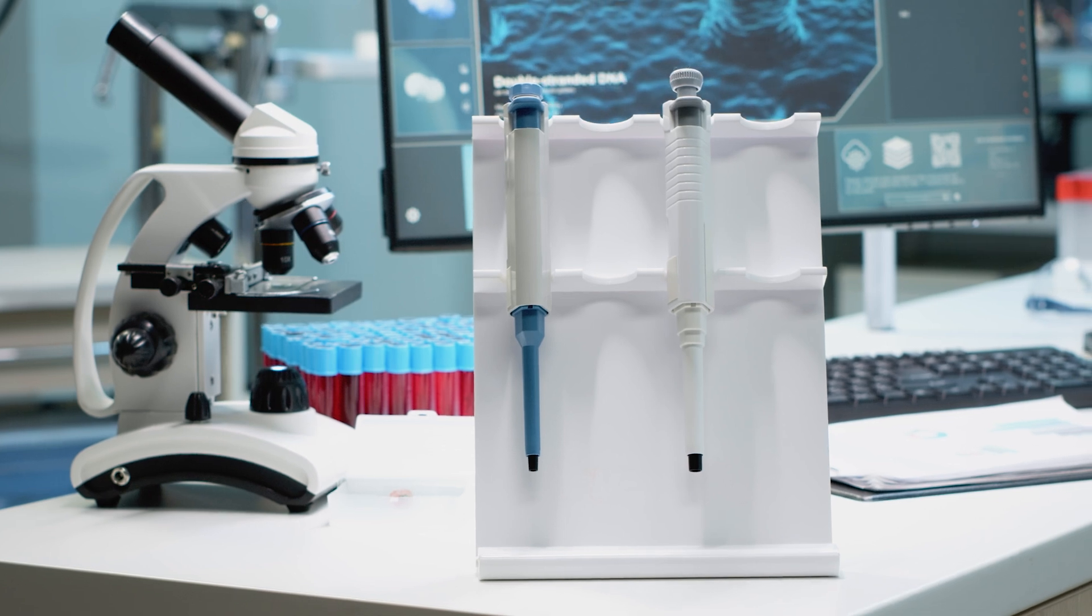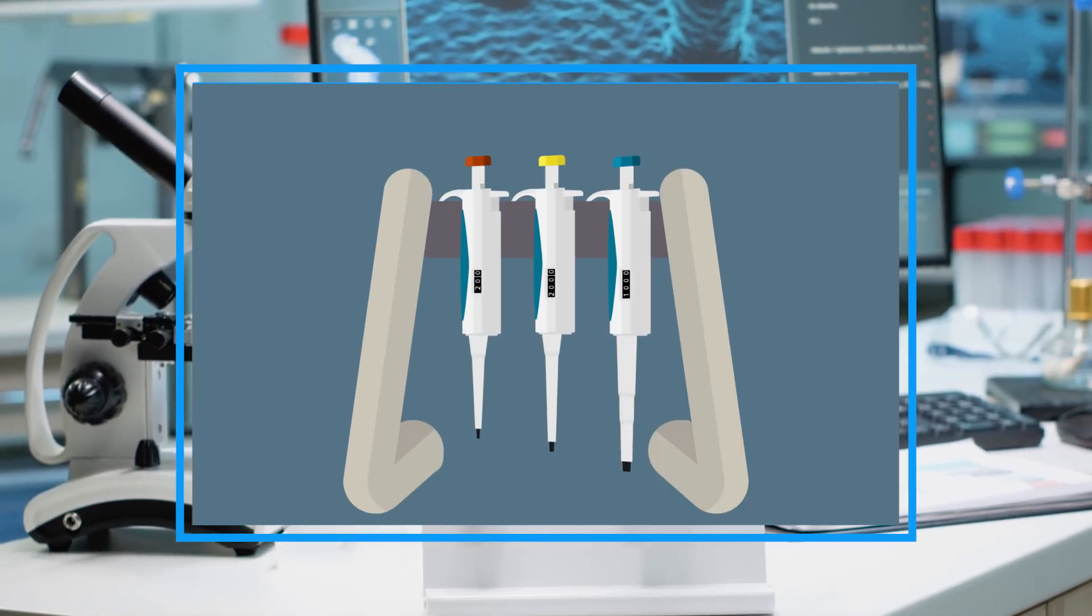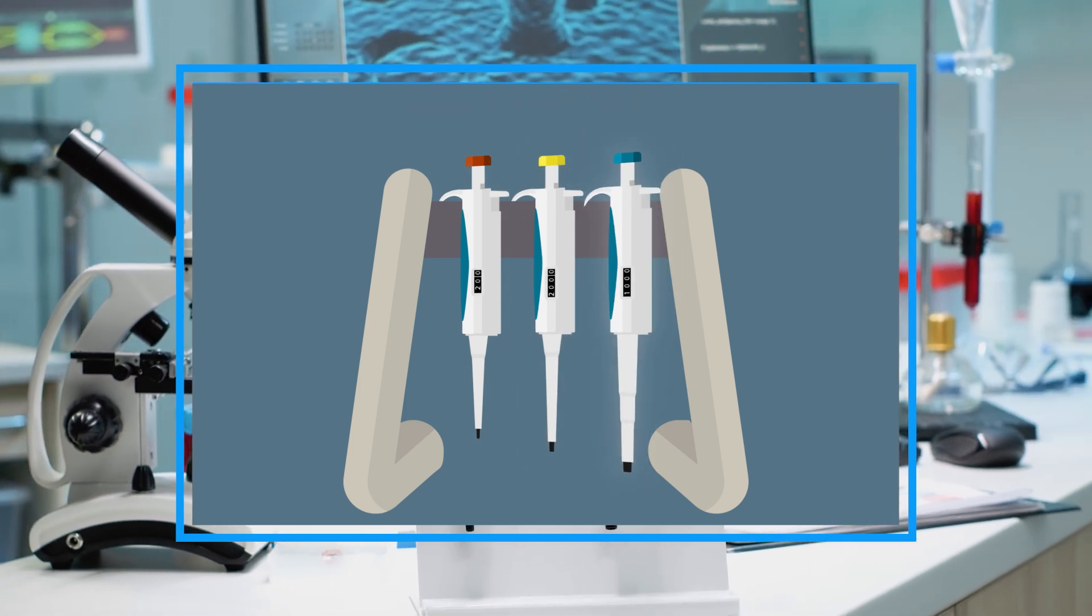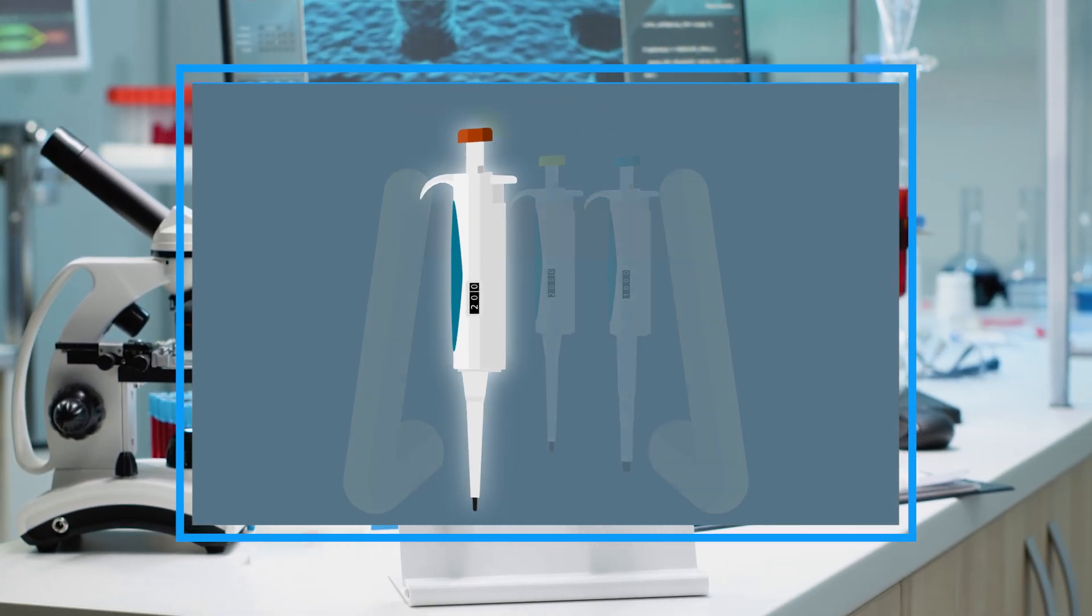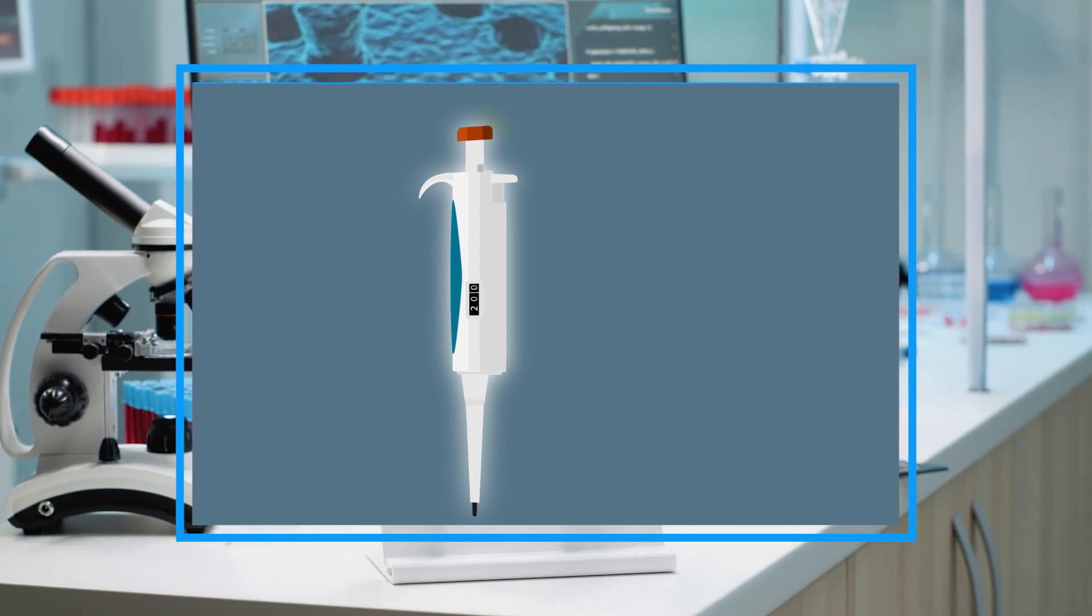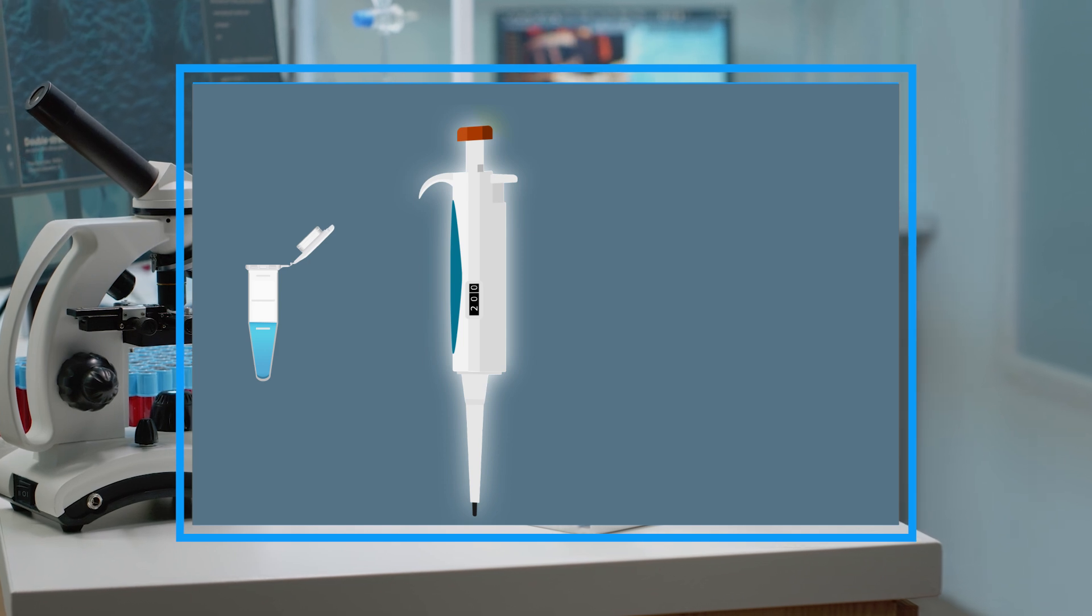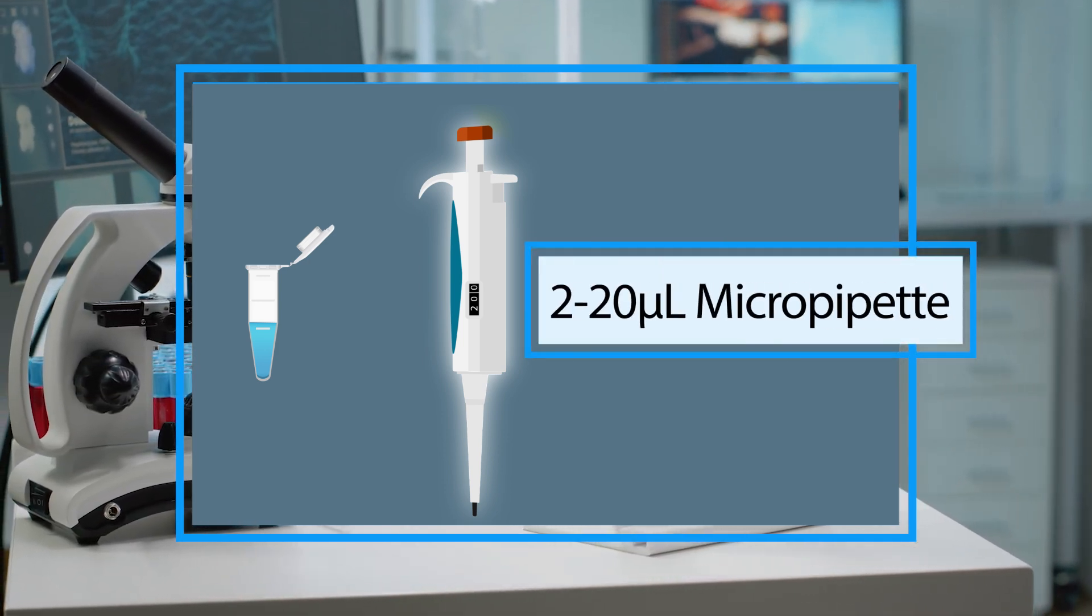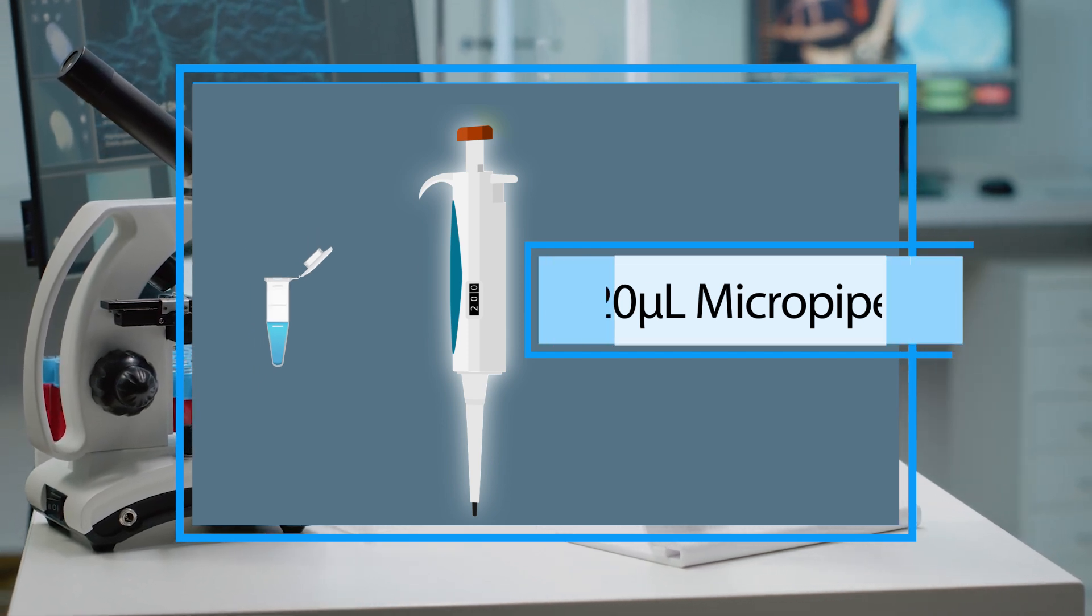Micropipets come in different volume ranges, typically spanning set intervals between 0.5 microliters to 1,000 microliters. You should select the smallest micropipet capable of transferring your desired volume. For example, to transfer 20 microliters, select a 2 to 20 microliter micropipet instead of a 20 to 200 microliter micropipet for more accurate results.